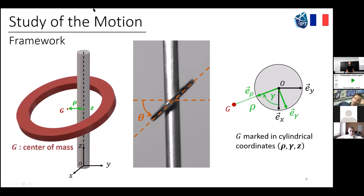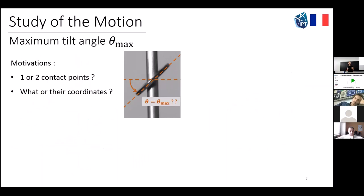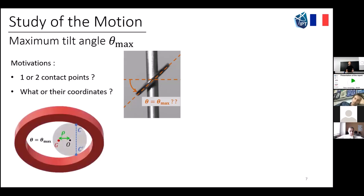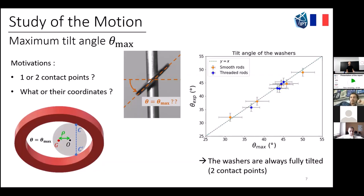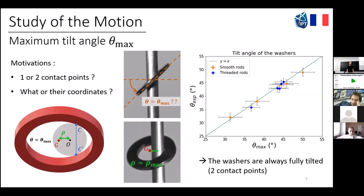The center of mass is marked by G, and in cylindrical coordinates it's marked by rho, gamma, and z. Theta is the tilt angle. We want to know the maximum tilt angle of our washers to determine whether there are one or two contact points and what their coordinates are, because that's where the reaction force is exerted. For a fully tilted washer, the angle is the maximum angle. Our experimental results for both threaded and smooth rods show that the washers are always fully tilted — so two contact points — and for the smooth rods, they're also fully shifted sideways, so the displacement of the center of mass is large.